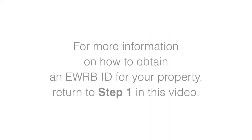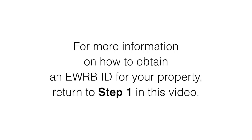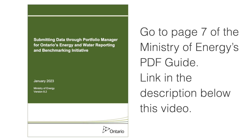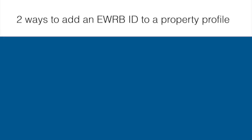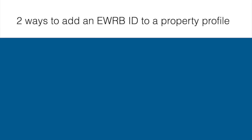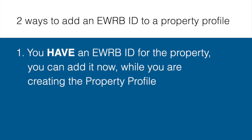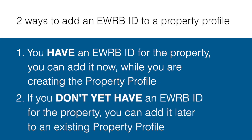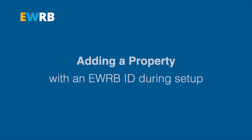For information on how to obtain an EWRB ID for your property, return to step 1 in this video, or go to page 7 of the Ministry of Energy's PDF guide, which is linked in the description below this video. There are two ways to add an EWRB ID to your property profile: first, if you have an EWRB ID for the property, you can add it now while you are creating the property profile; second, if you don't yet have an EWRB ID for the property, you can add it later to an existing property profile.